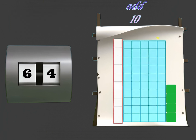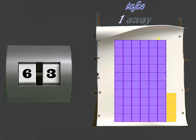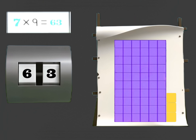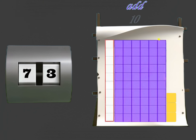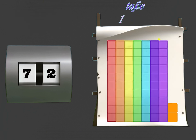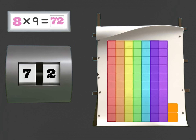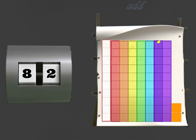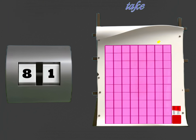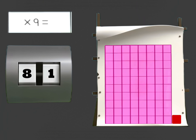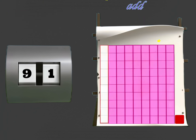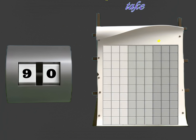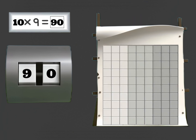Add ten and take one away. Seven times nine is sixty-three. Add ten and take one away. Eight times nine is seventy-two. Add ten, take one away. Nine times nine is eighty-one. Add ten and take one away. Ten times nine is ninety.